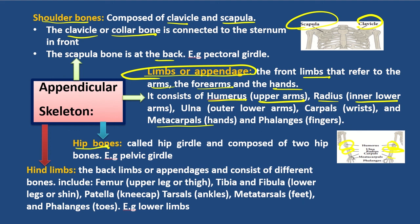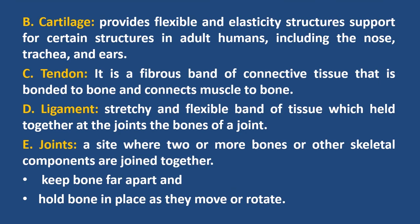The back limb consists of two hip bones and the pelvic girdle. The back limb consists of different bones including the upper leg, thigh, fibula, and the lower leg. This is the muscular component of the muscular system.